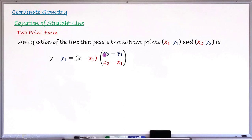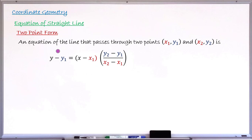Inside that second bracket is a fraction with numerator y₂ minus y₁ over x₂ minus x₁. This simple formula contains all of x₁, y₁, x₂, y₂ — the coordinates of the two points the line passes through. You simply substitute these values appropriately into the formula, and what you have in the end is the equation of that line. Let's take examples to see how we use this formula.